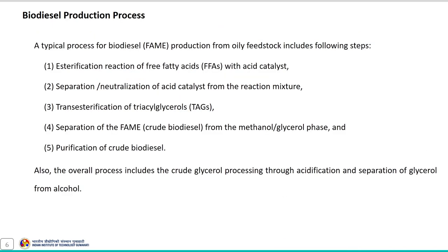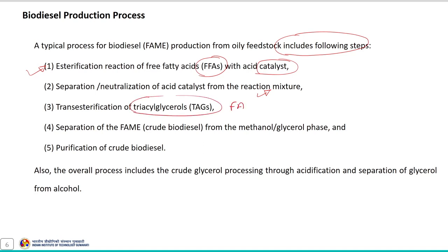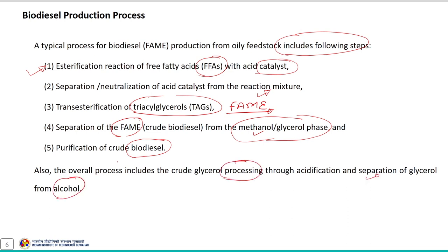The biodiesel production process includes several steps in which the esterification reaction of the free fatty acid with acid catalyst is the first step, followed by the separation and neutralization of the acid catalyst from the reaction mixture. The resultant mixture is transesterified to produce FAME, followed by the separation of FAME from methanol and glycerol phase, and finally purification of the crude biodiesel. The overall process also includes crude glycerol processing through acidification and separation of glycerol from alcohol.